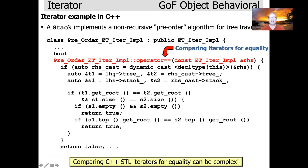If it matches — if the if-statement returns true — that means the right-hand side was a pre-order ET iter impl, so we can continue on. We get the left-hand side tree and stack (T1 and T2 are the trees, S1 and S2 are the stacks of the two iterators being compared). We check that we're comparing something from the same expression tree, that the stacks are the same size, whether things are empty (if both are empty, they're done), and we can also check whether the roots are equal. This check fails — they're no longer equal — when we reach the end of the traversal.